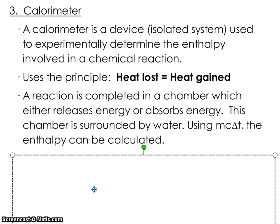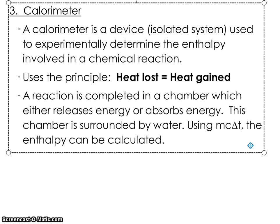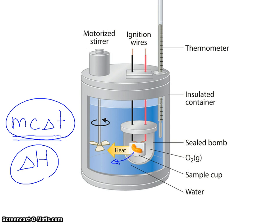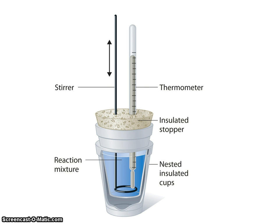Our reaction is completed in a chamber which either releases energy or absorbs energy. This chamber is surrounded by water, and using MC-delta-T, the enthalpy can be calculated. Of course, in a high school we don't have these fancy bomb calorimeters. These are used in industry to determine the calories of foodstuffs. What we're going to use are called simple calorimeters, which work just fine but cost a lot less, and this is what they look like.